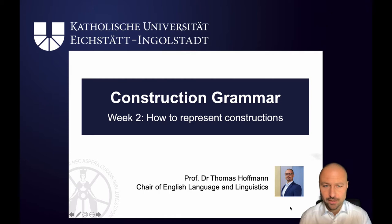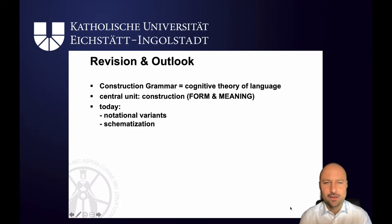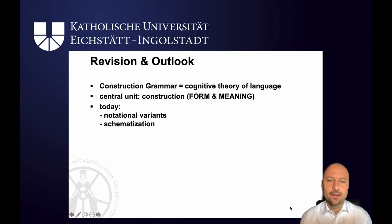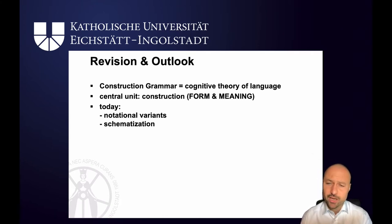Welcome back to our course on construction grammar. Today we will look at the various ways in which constructions can be represented. Just a quick revision: last session I introduced construction grammar as a cognitive theory of language. The central unit of this approach is already in the name — constructions, pairings of form and meaning. Today we're going to look more closely at the notational variants of how different approaches formalize or represent these form-meaning pairings. This is important because in the literature you might come across a multitude of variants, and it's important to understand that they're all doing the same thing. This session should enable you to read these various representations.